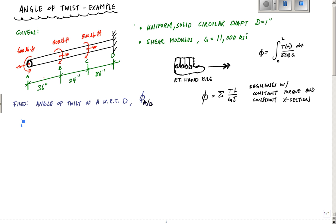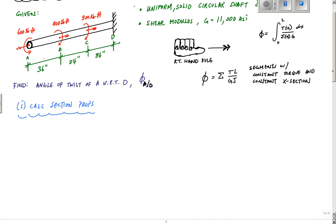First, we calculate section properties. The only one of value here is J, the polar moment of inertia. For a solid circular shaft, J equals pi over 2 times C to the 4th, where C is the outer radius. So J equals pi over 2 times one-half inch to the 4th, which is pi over 32 inch to the 4th. This is constant through the whole shaft.